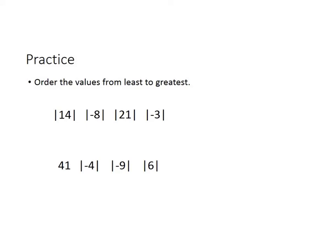This time we're going to order the values from least to greatest — smallest to greatest. Just like last time, we're going to change the absolute values so that we can write them out as their true distance away from 0. The absolute value of 14 is 14, the absolute value of −8 is 8, the absolute value of 21 is 21, and the absolute value of −3 is 3. In order from least to greatest: the absolute value of −3, then the absolute value of −8, then the absolute value of 14, and finally the absolute value of 21.